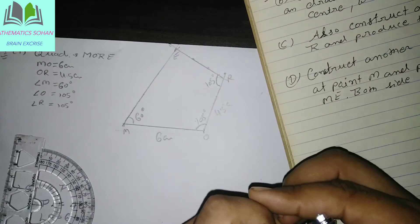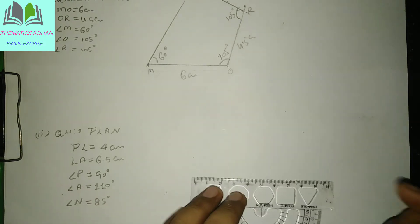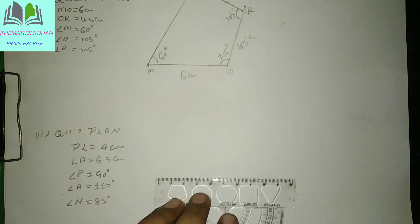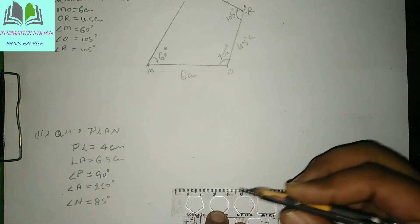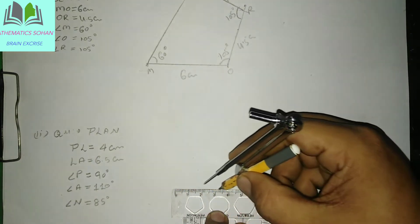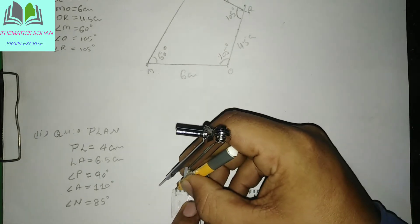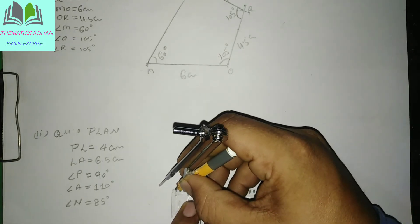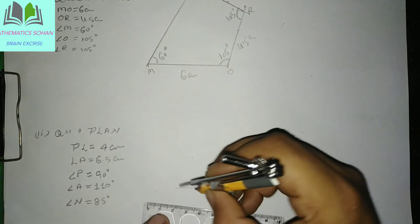Unko hum churning karwa deti hain. Next part: ab yahan pe humne ek line draw kari hai PL kitne — 4 cm. Jaisa PL hum ek 4 cm line draw kare lete hain. Yahan se lekar yahan tak hamara 4 cm ho jayega, toh hum yahan pe line draw kare lete hain. Okay students.